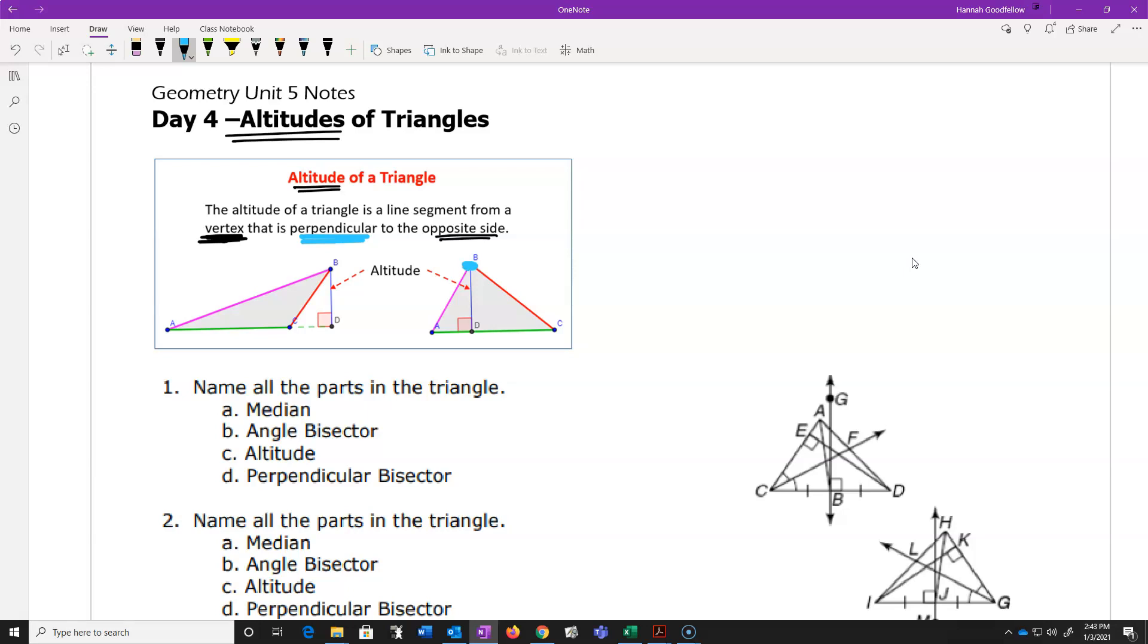Well, we're measuring from a plane, like say up here at point B, and we want to measure how tall it is, or its altitude. Sometimes altitude can be thought of as a height of a triangle. That's the same thing.